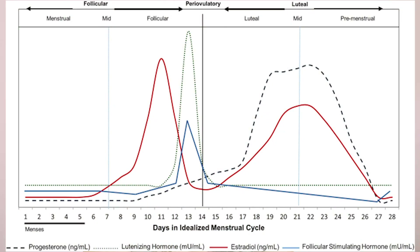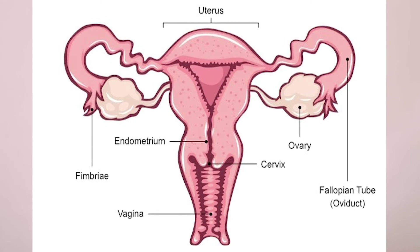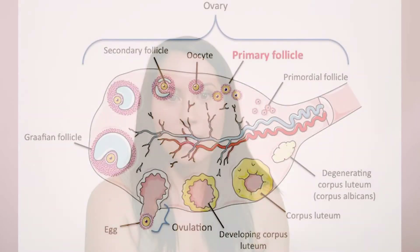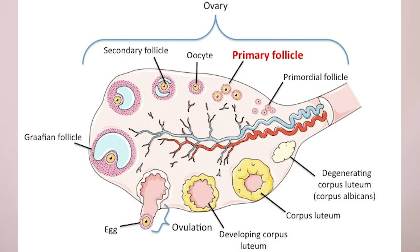About mid-cycle, ovulation occurs. There are different parts to your cycle. There's a follicular phase where your follicles, which house the eggs, are developing inside your ovaries. There will be one dominant follicle that will be releasing the egg. During ovulation, all the other follicles that were starting to develop kind of die off and allow the most dominant one to reach maturity.